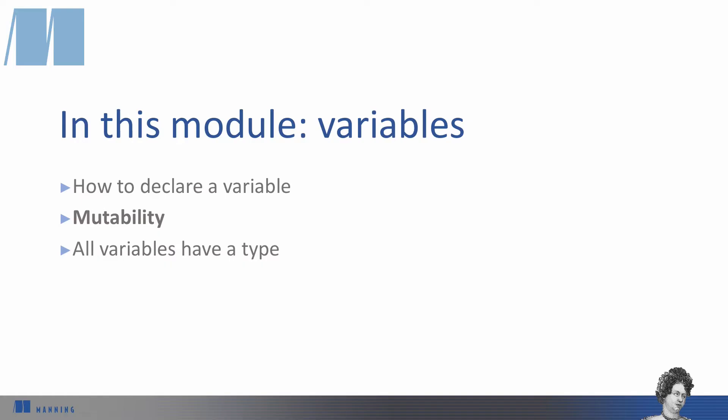Next, let's talk about mutability. One thing that's different about variables in Rust is that, by default, they can't actually vary.